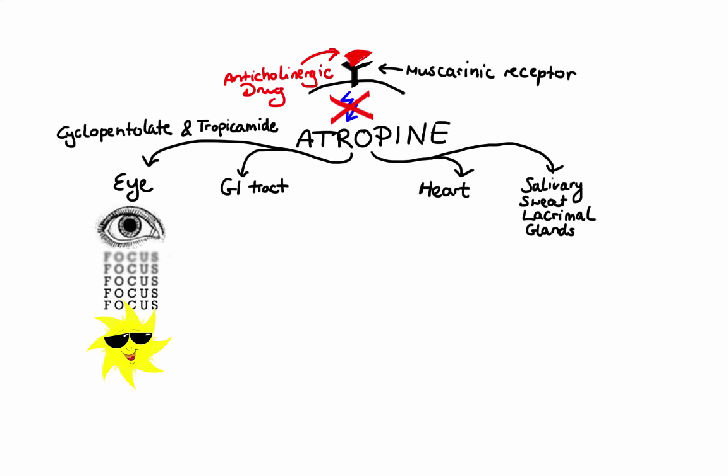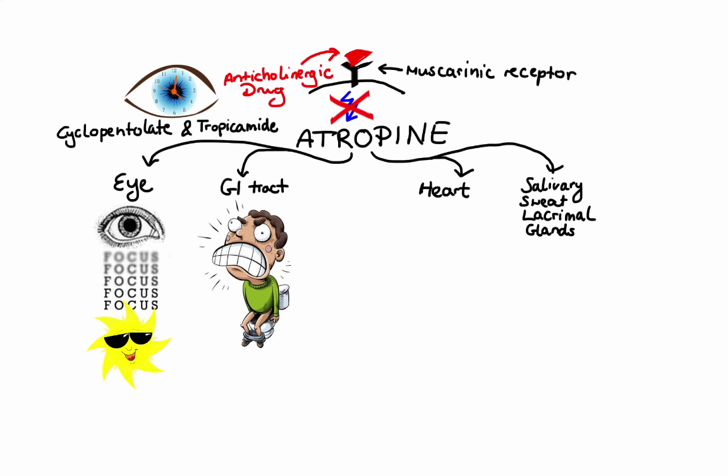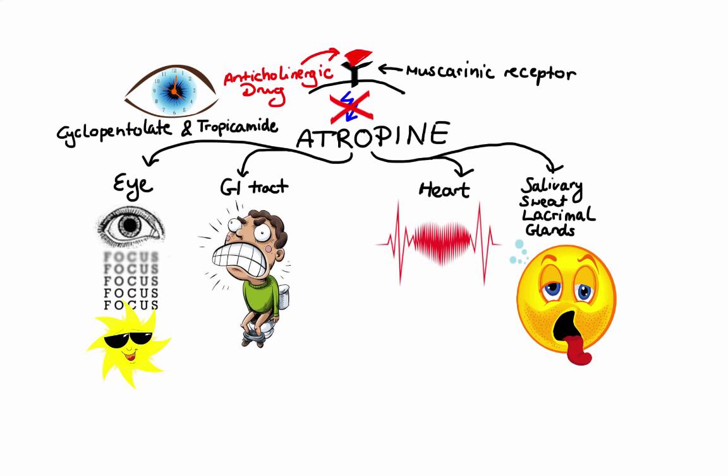While cyclopentolate and tropicamide can produce mydriasis that lasts for hours, atropine's effects can last for days. Atropine also blocks M3 receptors in the GI tract, resulting in reduction of GI motility from stomach to colon, prolonged gastric emptying, and lengthened intestinal transit time. At higher doses, atropine can block M2 receptors on the SA and AV nodes, producing tachycardia — heart rate may increase by 30 to 40 beats per minute. By blocking muscarinic receptors on salivary, sweat, and lacrimal glands, atropine produces dry mouth, dry skin, and causes body temperature to rise.